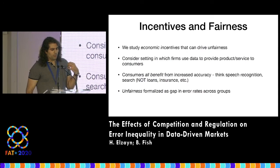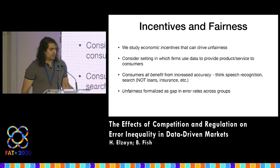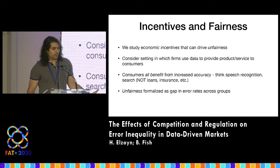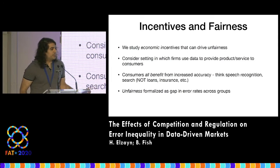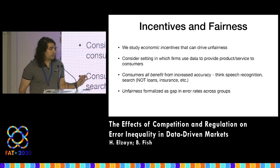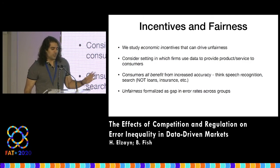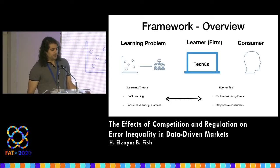We consider a setting in which firms are using data to provide a product or service to consumers using machine learning. Consumers all benefit from increased accuracy — think about a setting like speech recognition or search, not loans or insurance. We formalize unfairness as the gap in error rates across groups.